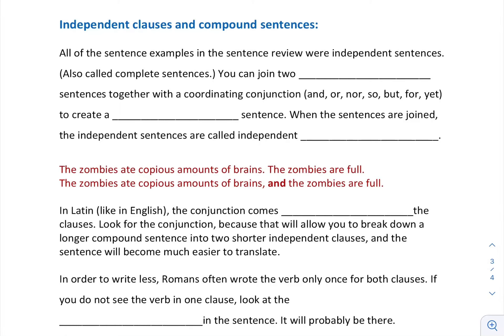All right, new sentence patterns. The first one we're going to look at is called independent clauses and compound sentences. All of the sentence examples that we just did in the review are independent sentences, they're also called complete sentences. They stand alone. You can join two independent sentences together with a coordinating conjunction, and the coordinating conjunctions are: and, or, nor, so, but, for, yet—exactly the same in English—to create what we call a compound sentence.